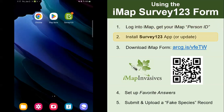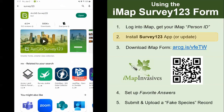Step two is to install the Survey123 app onto your device. Open up the Play Store or the App Store if you're on an iOS device. Search for Survey123 — the full name of the application is ArcGIS Survey123 by Esri. This is where you install the application.